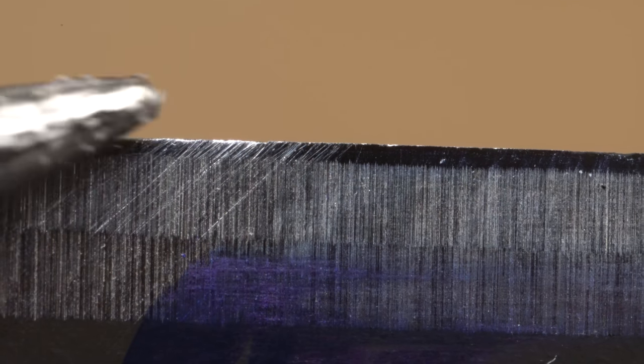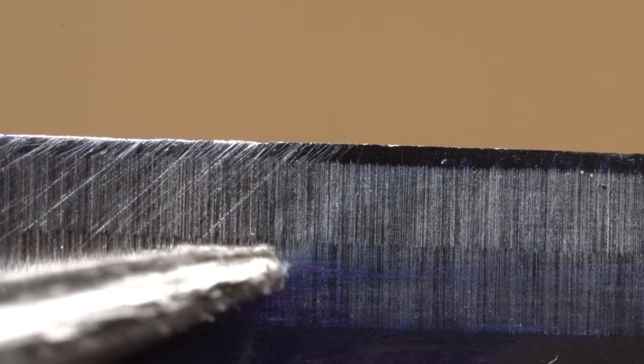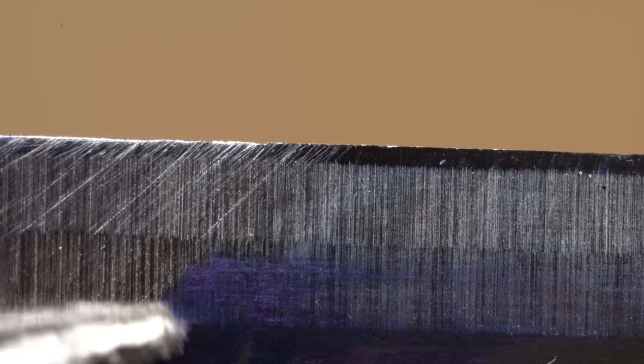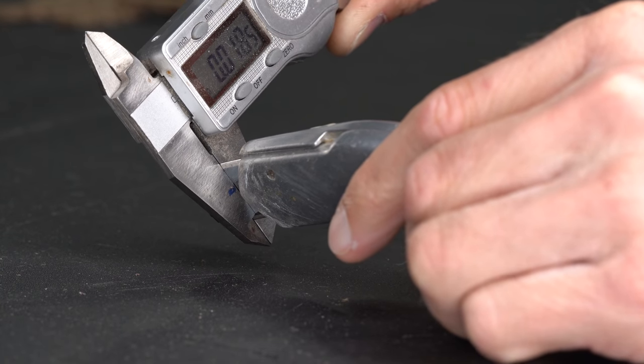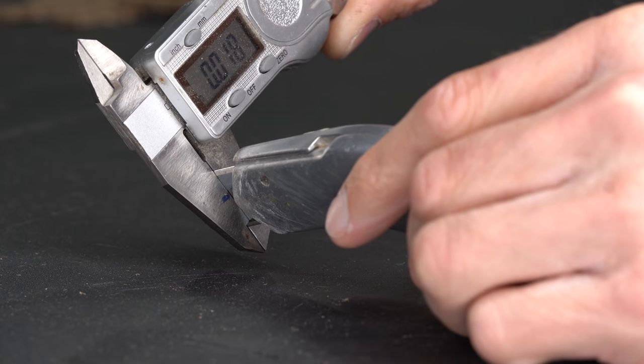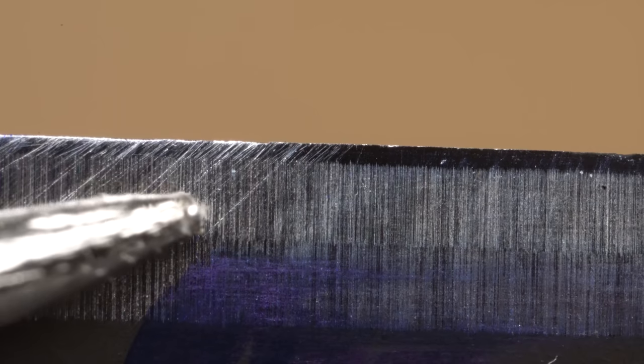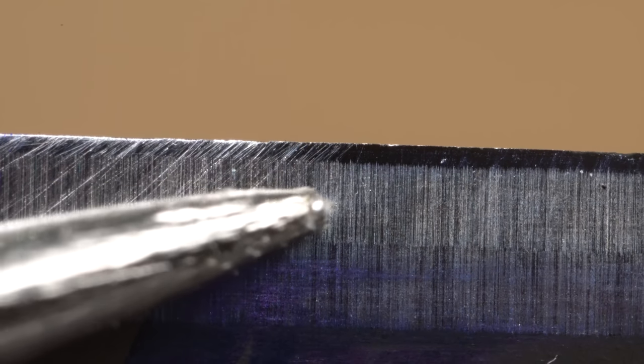The thickness of the blade between this side here and the opposite side is still extremely thin. It's like sheet metal thin and that's what gives it the slicing ability. So even when you have a really dull apex like this, it'll still slice through cardboard fairly easily just because of that thinness.